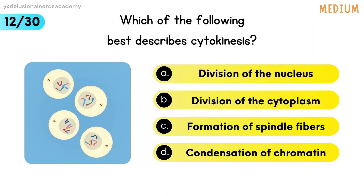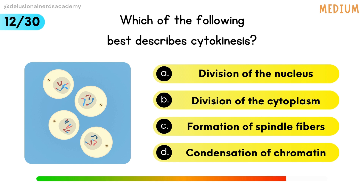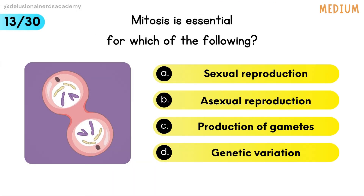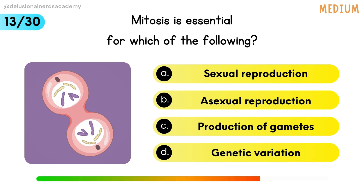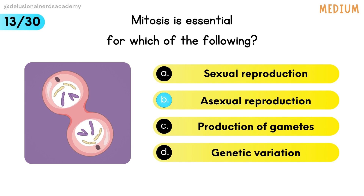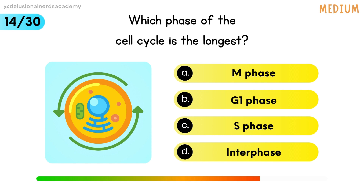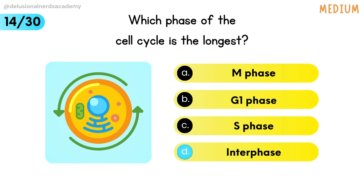Which of the following best describes cytokinesis? Division of cytoplasm is the correct option. Mitosis is essential for which of the following? The answer is asexual reproduction. Which phase of the cell cycle is the longest? Interphase is the most prolonged phase of the cell cycle.